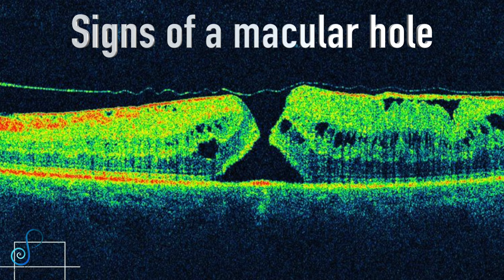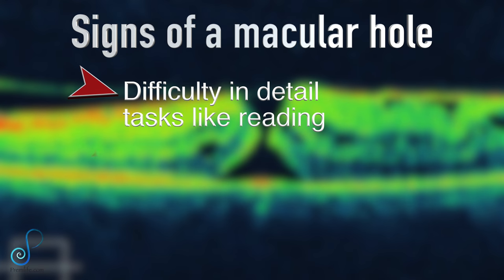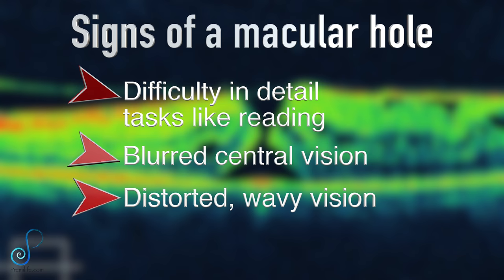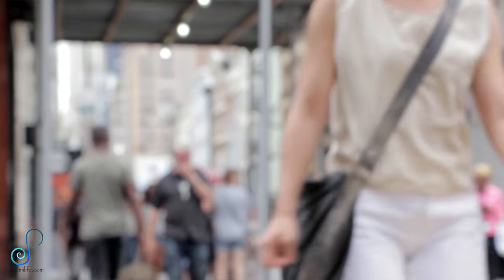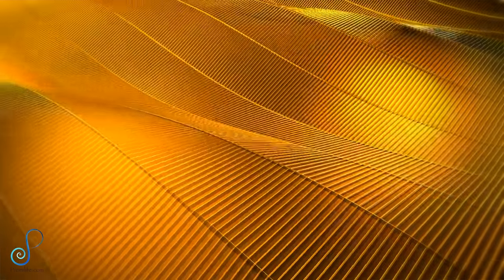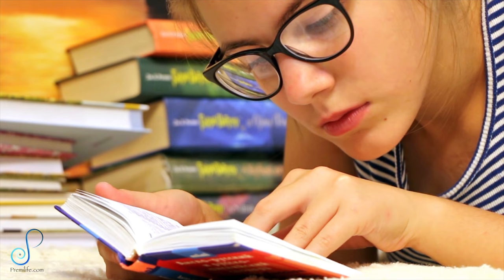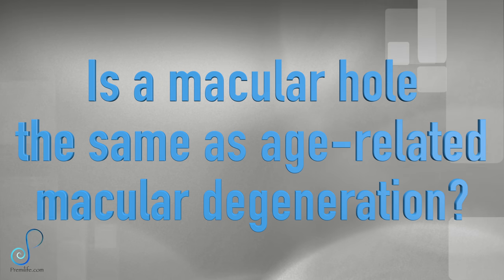The signs of a macular hole include: difficulty in detailed tasks like reading, blurred central vision, distorted wavy vision, and a central blind spot or gray area. The most common sign is a slow decline in the central vision of the affected eye. The extent to which vision is affected depends on the location and size of the macular hole and the stage of its progress. Macular holes show up slowly over time, so you may not notice signs until vision is affected. In the early stage, people may notice a slight distortion or blurriness in their straight-ahead vision — straight lines or objects look wavy or bent — and reading or performing routine tasks with the affected eye becomes difficult.